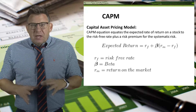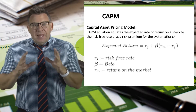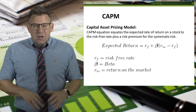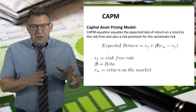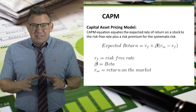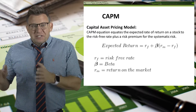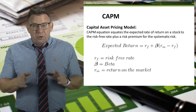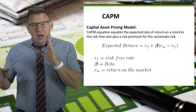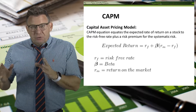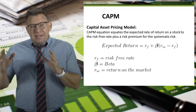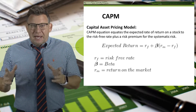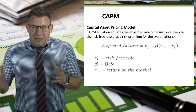The formula for CAPM is: expected return equals the risk-free rate plus the risk premium. The risk premium is the market return minus the risk-free rate, times beta.